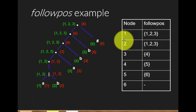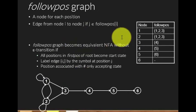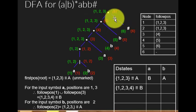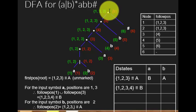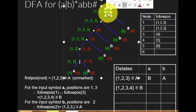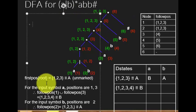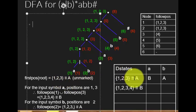Now we construct the DFA. The followpos table is the main table we use. We always start from the root — the topmost node in the syntax tree. The firstpos of the root is {1, 2, 3}, so {1, 2, 3} is the first state of the DFA. We know the input symbols are A and B.